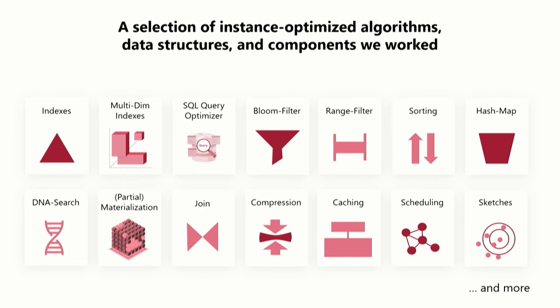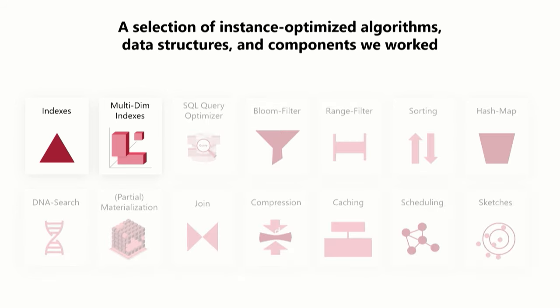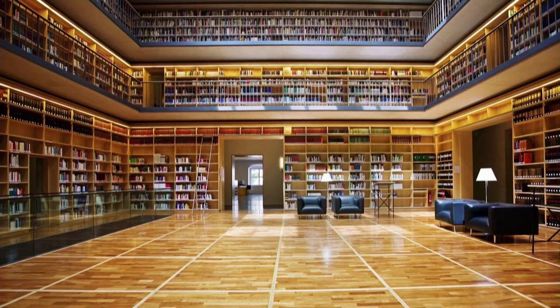To give you a few examples, these are some of the algorithms we have been working on over the last couple of years: indexing, bloom filters, range filters. These are very fundamental data structures where we took a fresh approach. Here I will give a brief overview of two of them — indexes and multidimensional indexes — just as an illustration.